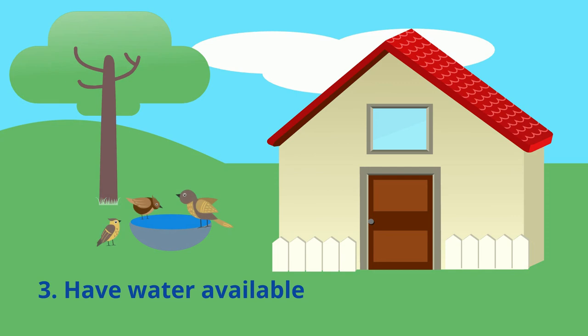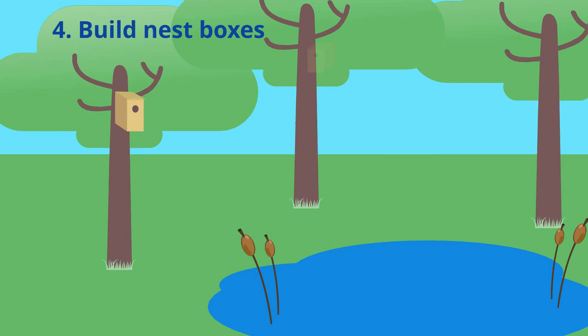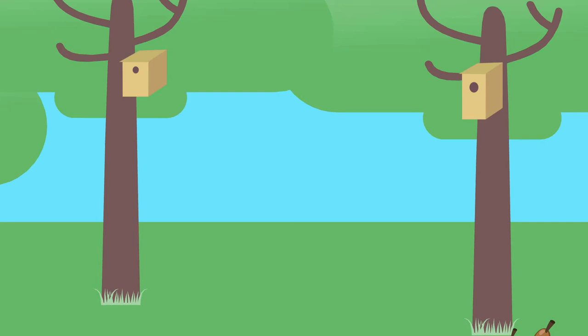Provide bird baths and other watering points, particularly during dry times. Build and maintain nest boxes where only a few hollow trees remain. Monitor the nest boxes to ensure they're not being taken up by pest species such as Indian miners and starlings.